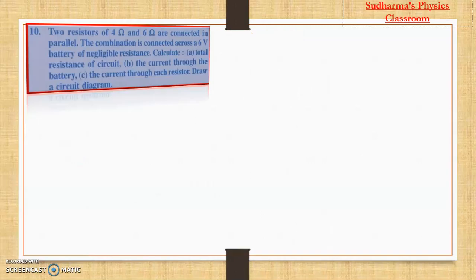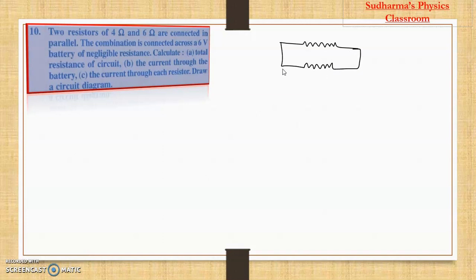Next question — another type. We already discussed the series combination and how potential and current are divided in that. Now let us try a parallel combination. Two resistors of 4 ohm and 6 ohm are connected in parallel. In this kind of question it is better to draw the diagram first. So we have 4 and 6 ohms connected in parallel, connected to a 6 volt battery.